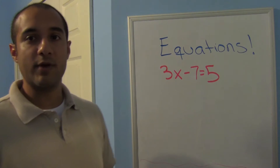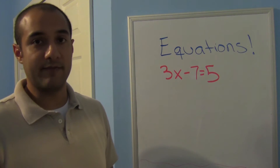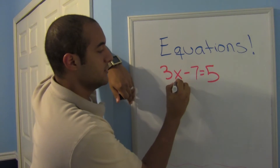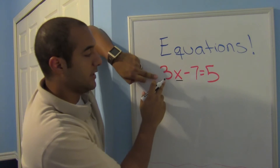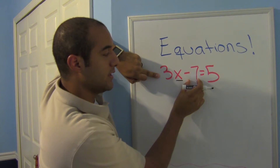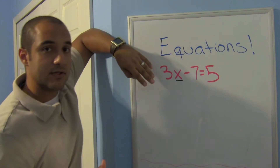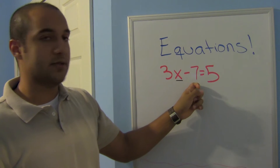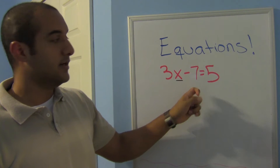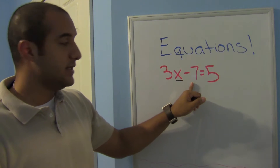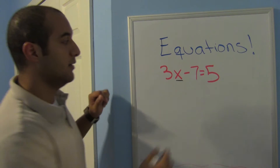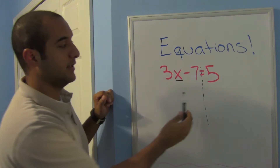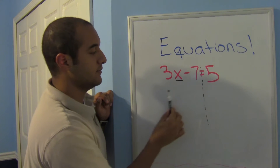Here we have a very basic equation: 3x minus 7 equals 5. What we want to do is find out what x is, so we need to get rid of the 3 and the minus 7. Our first step is to get rid of anything that's adding or subtracting first, so in this case we have a minus 7. That means we need to send whatever's on the left side over to the right side — remember, the equal sign splits between the left and the right side.